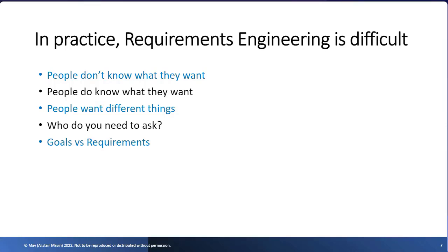One quite common issue in eliciting and documenting requirements is when people confuse goals and requirements. What I call goals — what INCOSE tends to call needs, and other people call other things — are high-level aspirational things that people want. My sort of joke when doing requirements training is: a goal is like the Spice Girls say, tell me what you want, what you really really want. Goals are fundamentally aspirational, often about emotions and how you want to feel, but they're not really about a system. Requirements are about the system you're going to build, which will address the goals. Sometimes when you're seeking requirements, people give you goals instead, so you've got to be careful to clarify the difference.